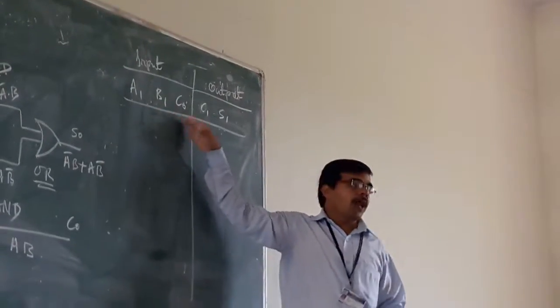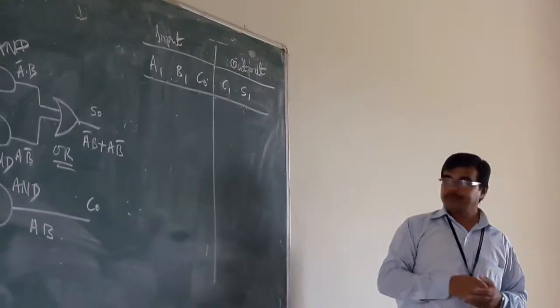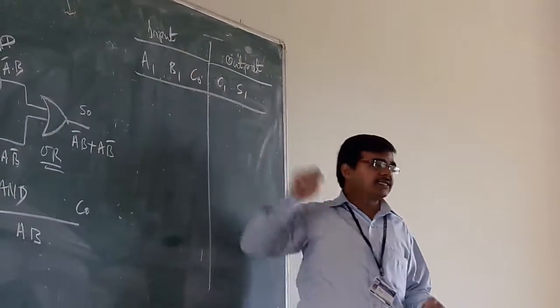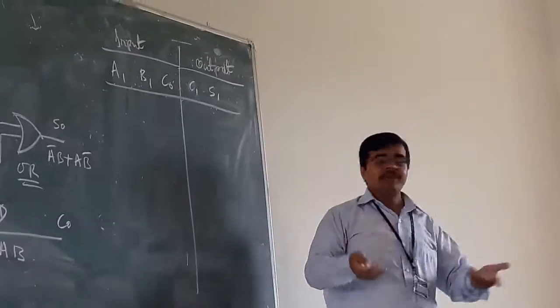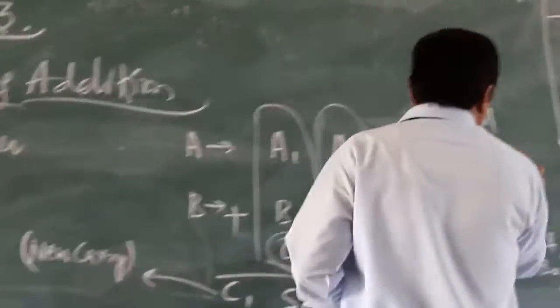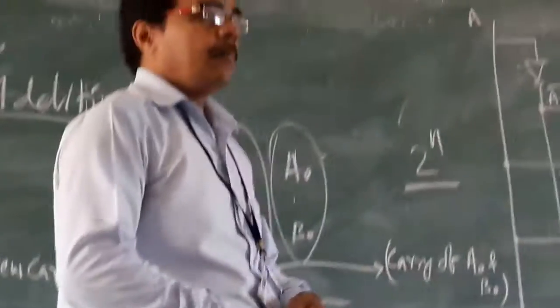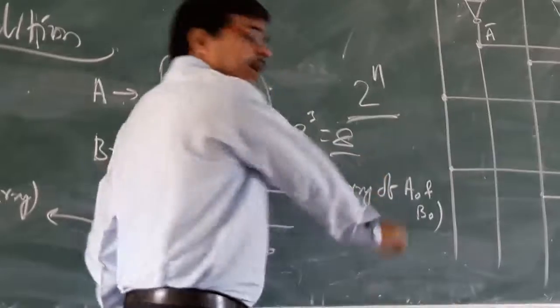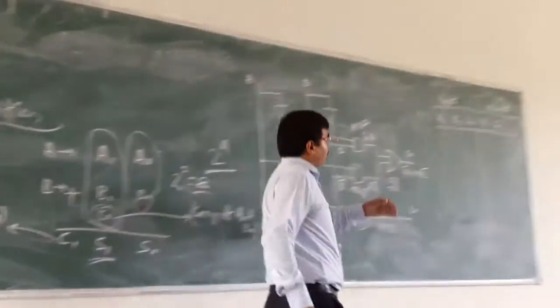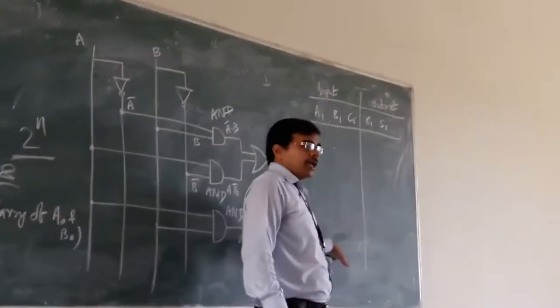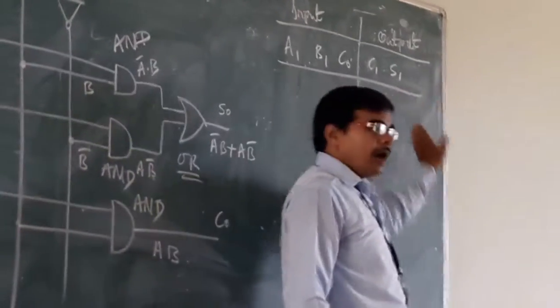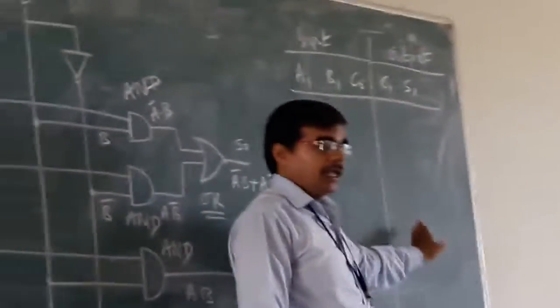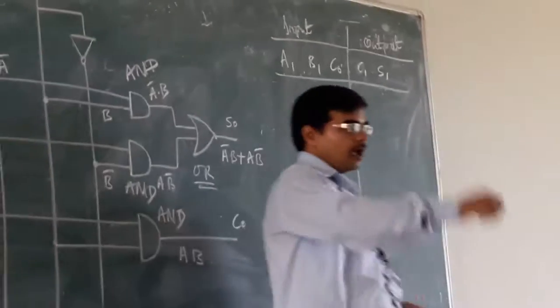And as here you are having three inputs - A1, B1 and C0 - all these different combinations that are possible in case of here, the number of possible inputs that you are having is 2 to the power 3. That means 8 different combinations are possible. So for these 8 different combinations, what is your sum output, what is your carry output that now you have to do.